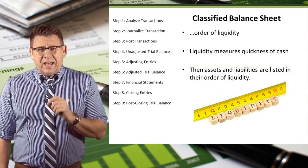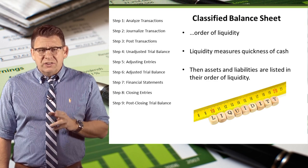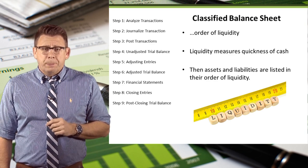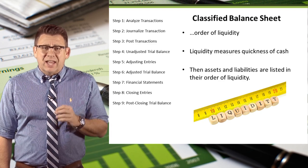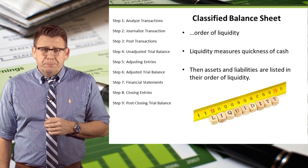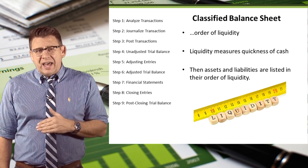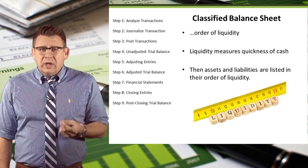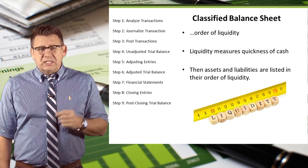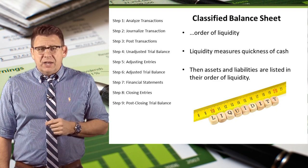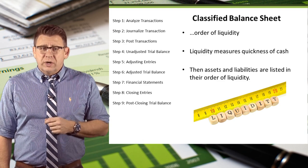In order to understand how to prepare a classified balance sheet, we need to learn a few new terms. A classified balance sheet lists assets and liabilities in order of their liquidity. Liquidity measures quickness of cash — meaning how quickly assets will be turned to cash or how soon liabilities need to be paid. Assets and liabilities are then listed in the order of their liquidity.